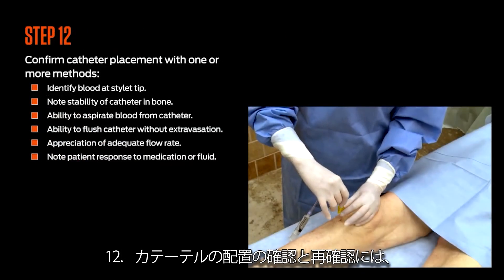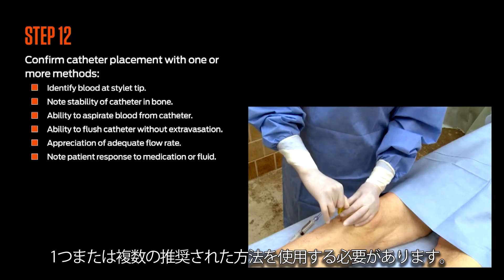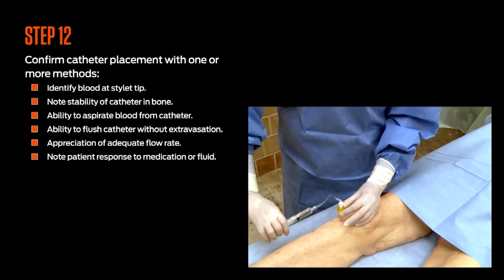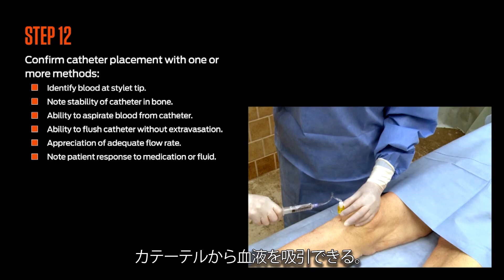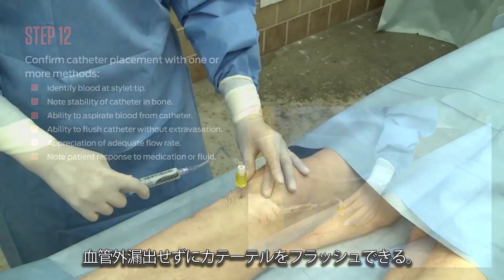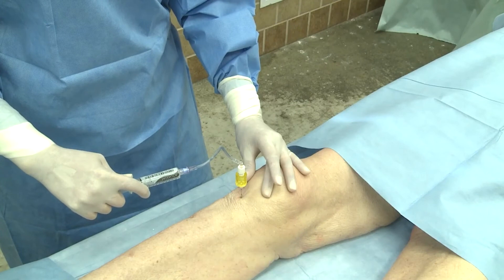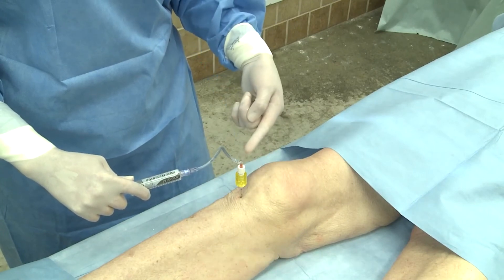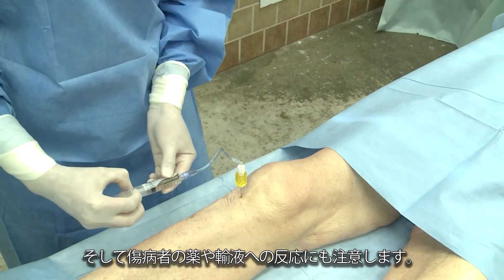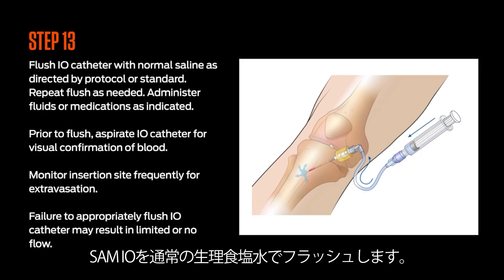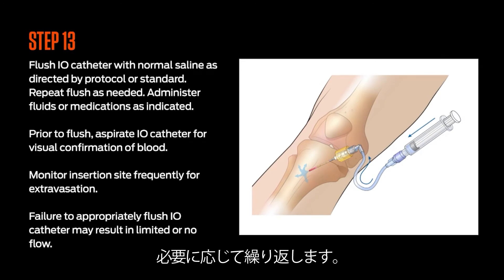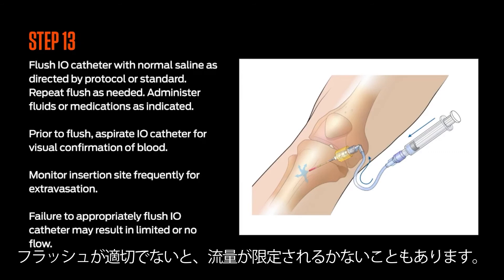Step 12: Confirmation and reconfirmation of catheter placement should include one or more recommended methods: identify blood at the stylet tip, note stability of catheter in the bone, note ability to aspirate blood from the catheter, note ability to flush the catheter without extravasation, appreciation of adequate flow rate, and noted patient response to medications or fluids. Step 13: Flush the SAM-IO with normal saline as directed by protocol or standard. Repeat flush as needed. Failure to appropriately flush the SAM-IO catheter may result in limited or no flow.